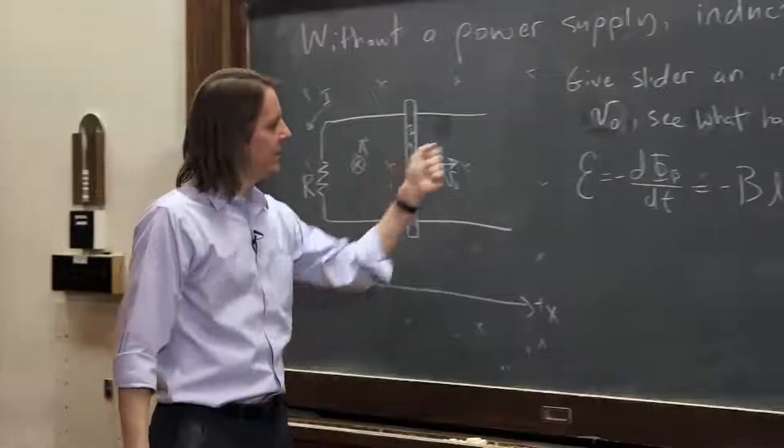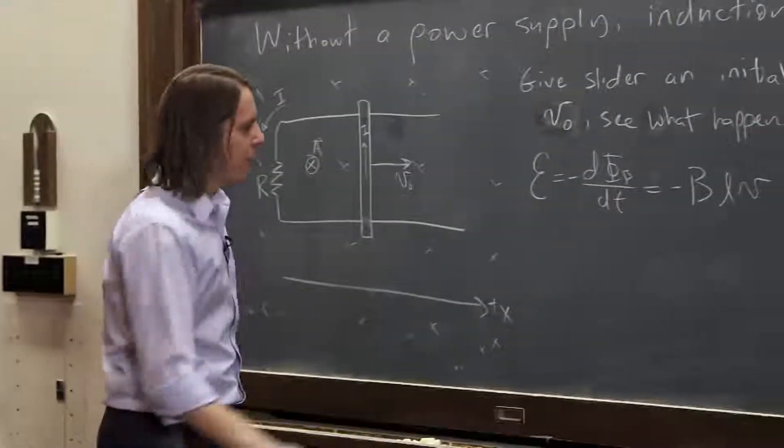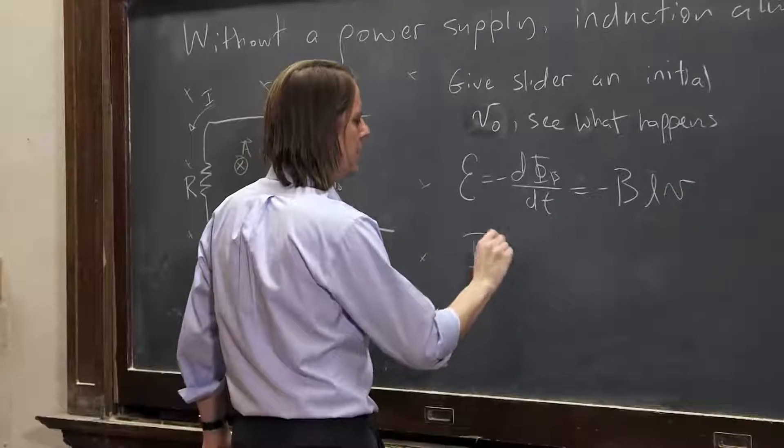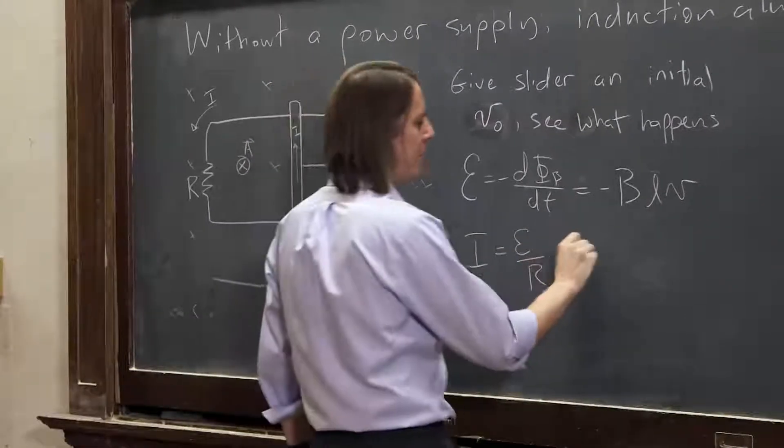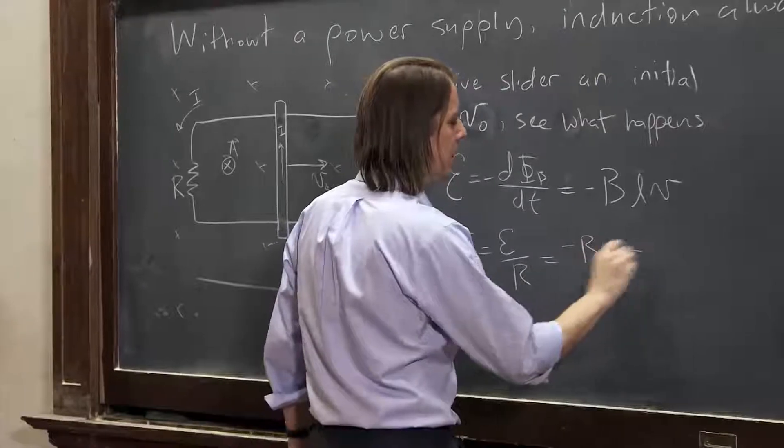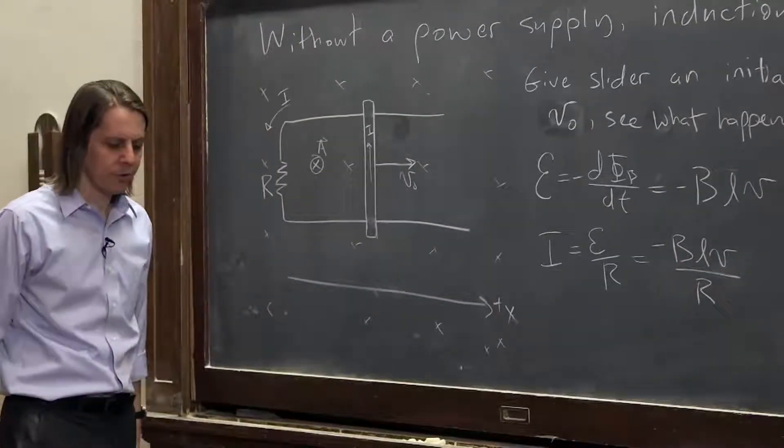So when you give it initial velocity, current flows, just like we talked about last time. The current, I, is EMF over R, so it's basically minus blv over R. So there's our current.